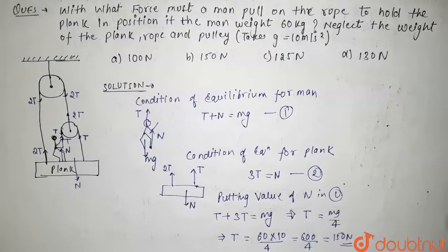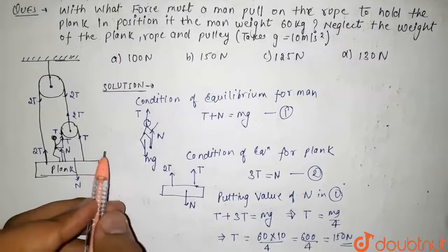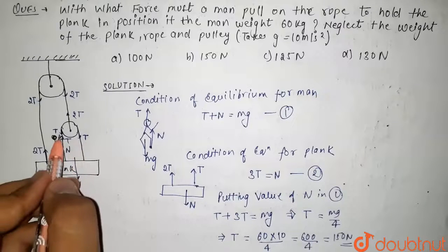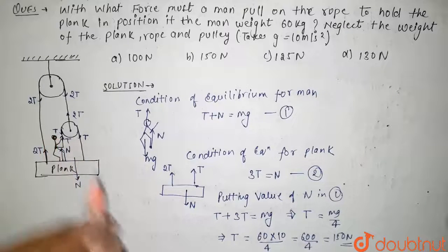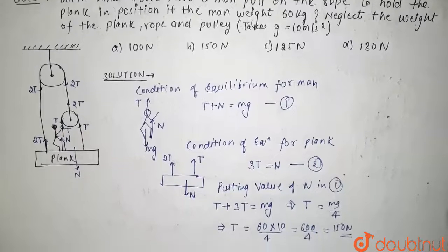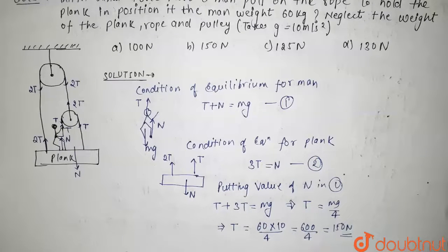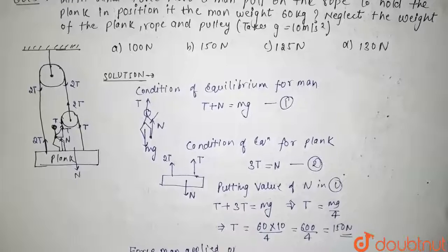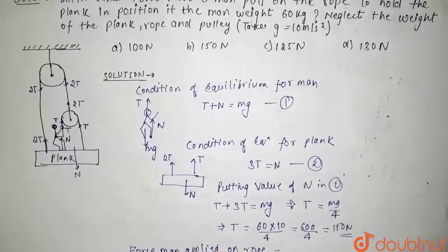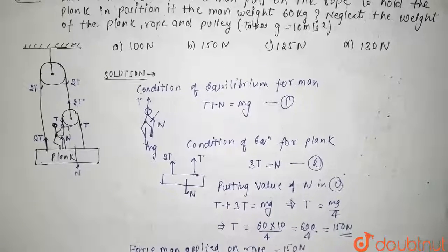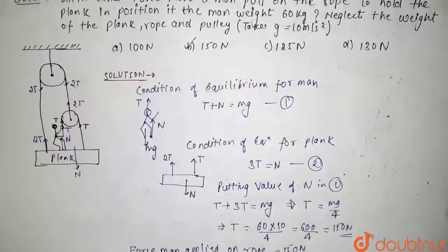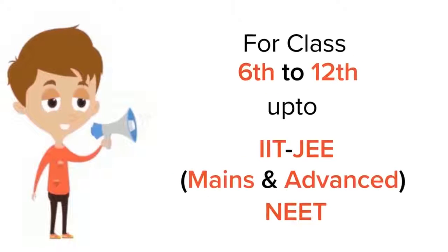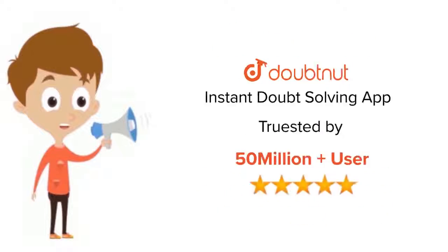In the question we were asked to find the force the man pulls on the rope, which we assumed to be tension T. So the force applied on the rope is 150 Newton. The correct option is option B. Thank you, guys. For class 6-12, IIT JEE and NEET level, trusted by more than 5 crore students — download DoubtNut today.